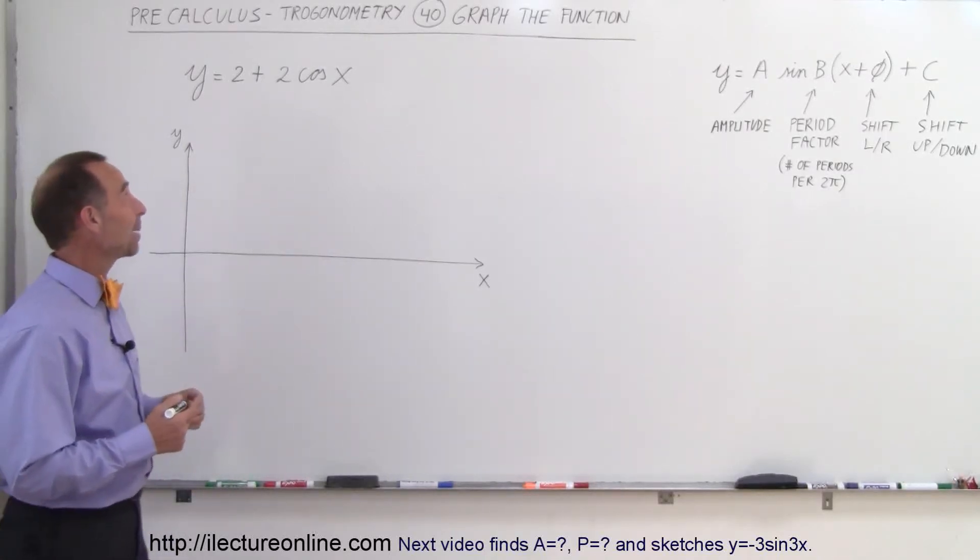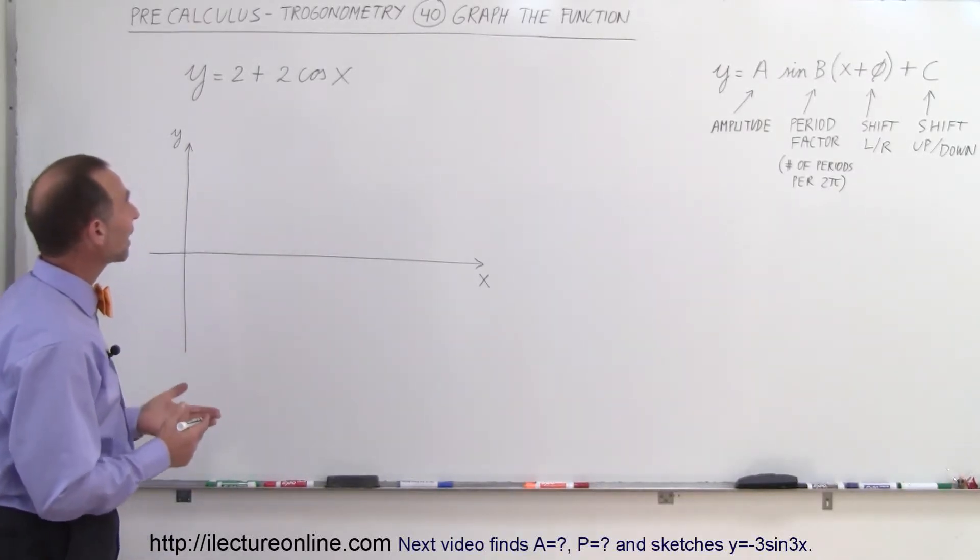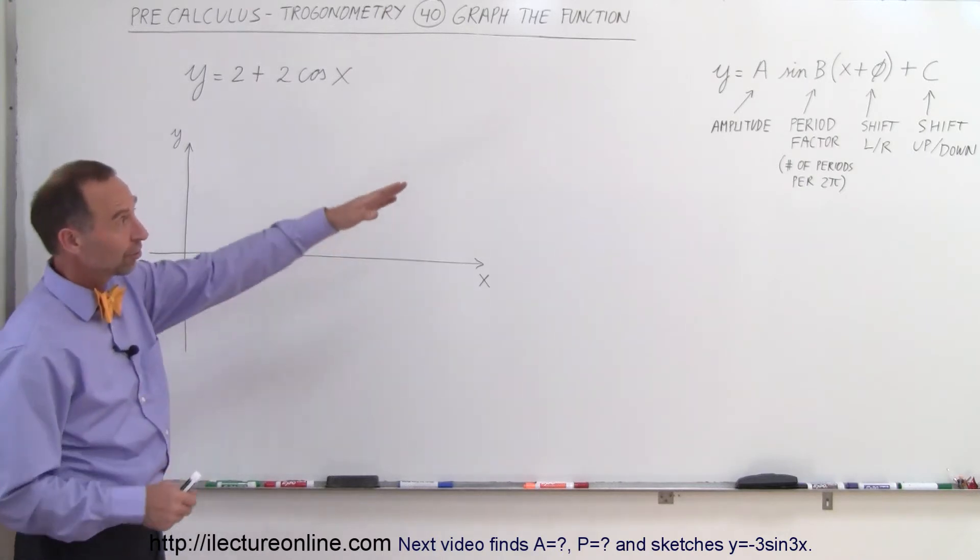Welcome to Electron Align and here's our next example. Y equals 2 plus 2 times the cosine of X. So there's our general equation.